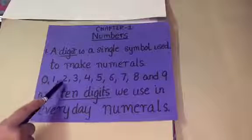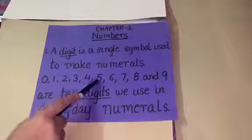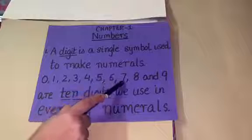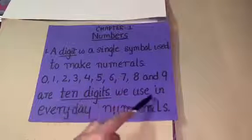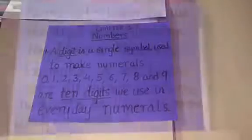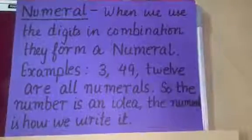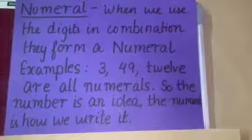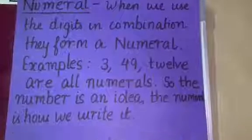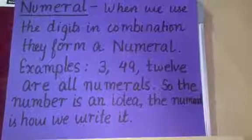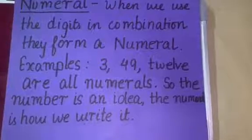0, 1, 2, 3, 4, 5, 6, 7, 8 and 9 are 10 digits we use in everyday numerals. When we use the digits in combination, they form a numeral. Some examples of numeral are 3, 49, 12. They are all numerals.